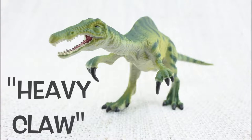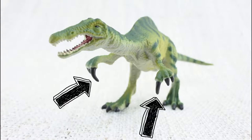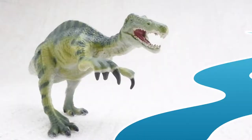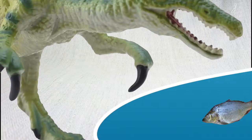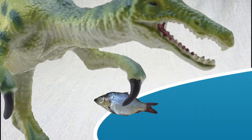Baryonyx means heavy claw because it had one large claw on each hand. It was the first dinosaur discovered that ate fish. It would use its big claws to catch them like a spear fisherman.